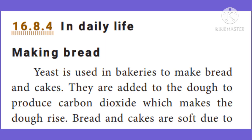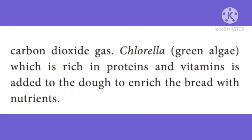Making bread: Yeast is used in factories to make bread and cakes. Yeast is added to the dough to produce carbon dioxide which makes the dough rise. Bread and cakes are soft due to carbon dioxide gas. Chlorella, a green algae rich in proteins and vitamins, is added to the dough to enrich the bread with nutrients.